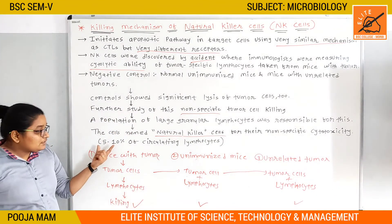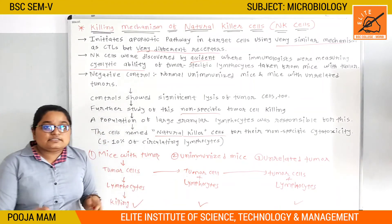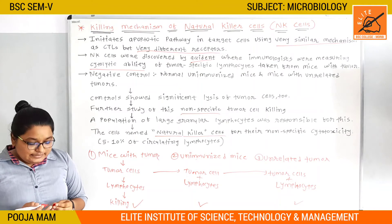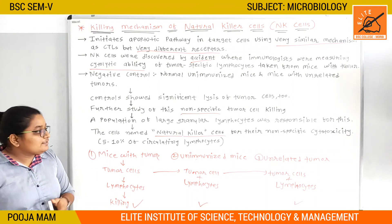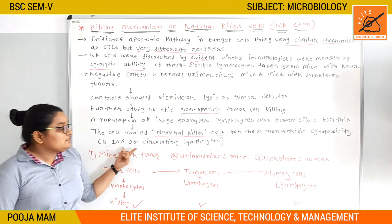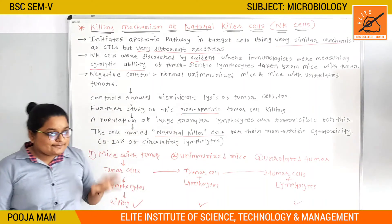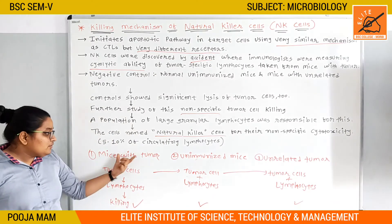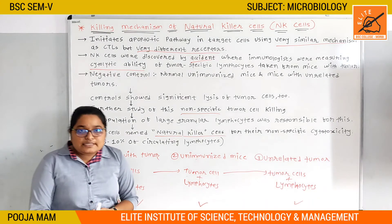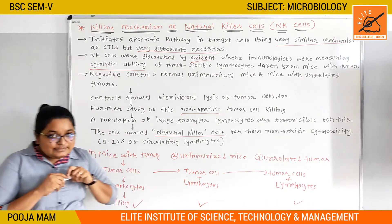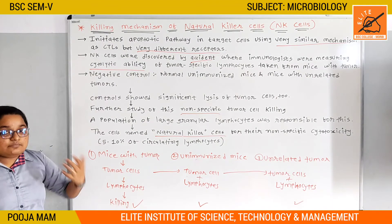Natural killer cells comprise 5 to 10% of the circulating lymphocytes in our body. So it was an accidental discovery of the natural killer cells — this is how the experiment with mice led to their identification.